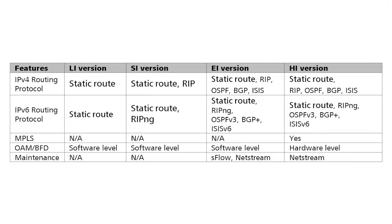It's really the same story for IPv6. The LI supports static routing, we add RIPng on the SI version, and then as we move to the EI and HI versions we add OSPFv3, BGP Plus, and ISIS v6.